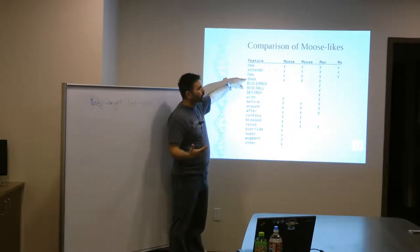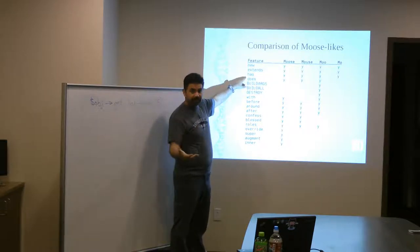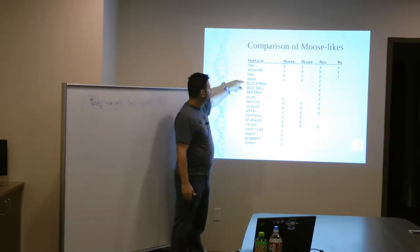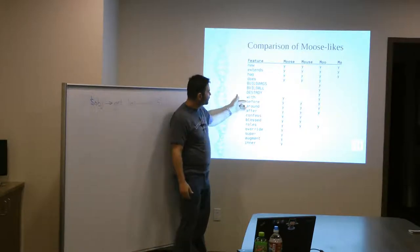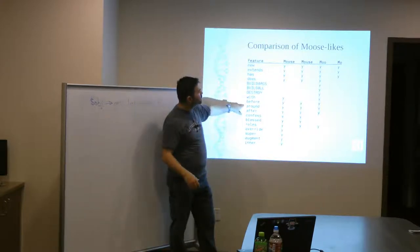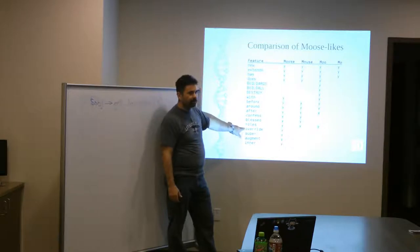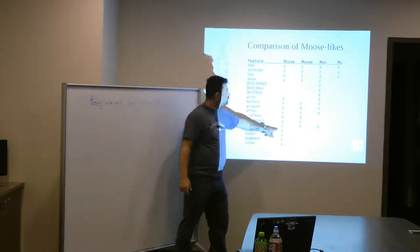So extends, as you can see, is pretty much implemented across all the different Moose-like modules. Has allows you to define attributes. Does, what's does do? Oh, does allows, if you have a role, and the role defines behavior, then you say does to say that this class uses that behavior. It does what the role defines. And with is also like does. And then you have your before, around, and after stuff. It allows you to, you know, define, I want this method to run around this other method. And as you can see, the Mo does not implement that. And then some of these other things down here, as you get further and further down, you get down to override and super. We talked about that and the way you can override methods that are defined in a parent class and refer to the methods that are defined in a parent class with super. However,